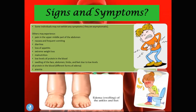So what are the signs and symptoms of Ménétrier's disease? Some individuals may not exhibit any symptoms, meaning they are asymptomatic. But others may experience pain in the upper or middle part of the abdomen, nausea and frequent vomiting, diarrhea, loss of appetite, extreme weight loss, malnutrition, low levels of protein in the blood, and swelling of the face, abdomen, limbs and feet due to low levels of protein in the blood — basically different forms of edema — and also anemia.